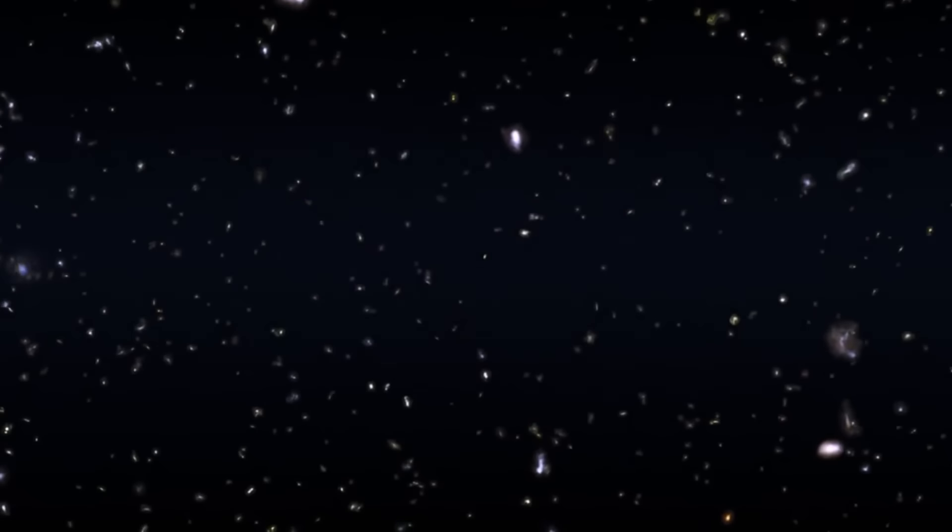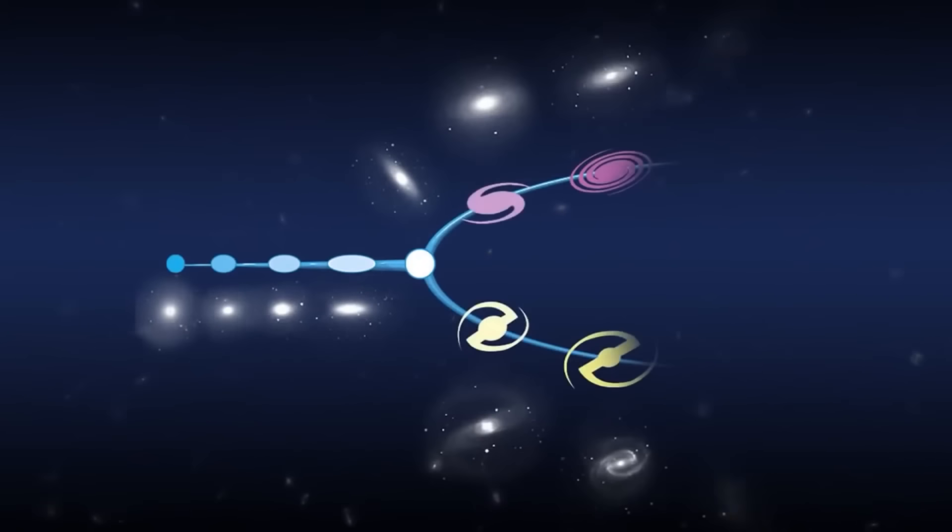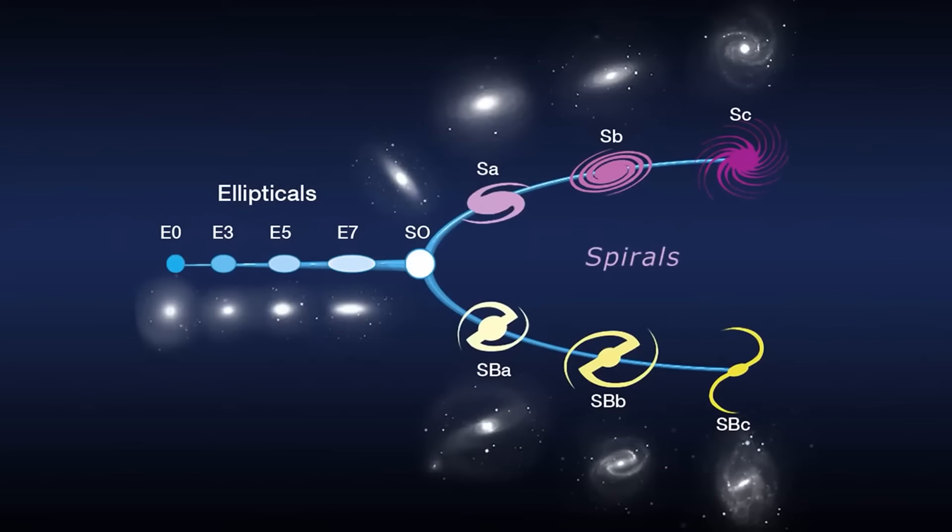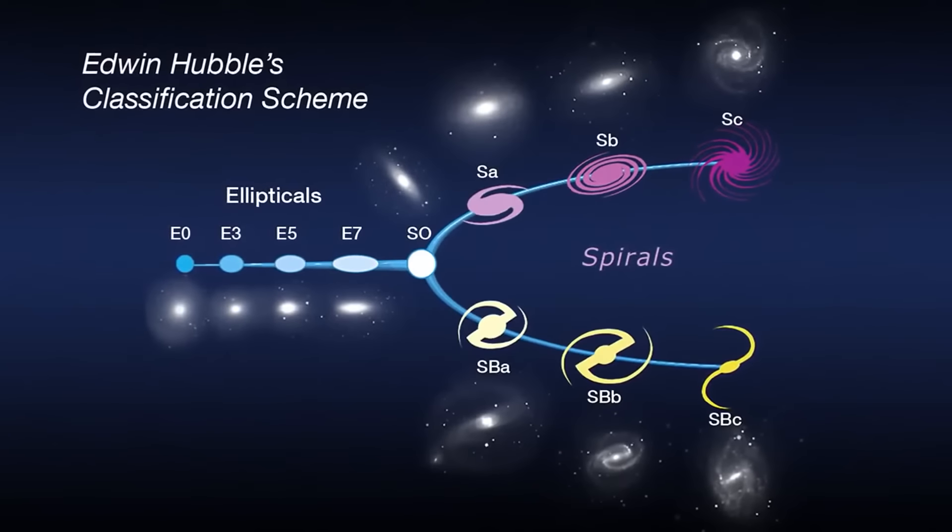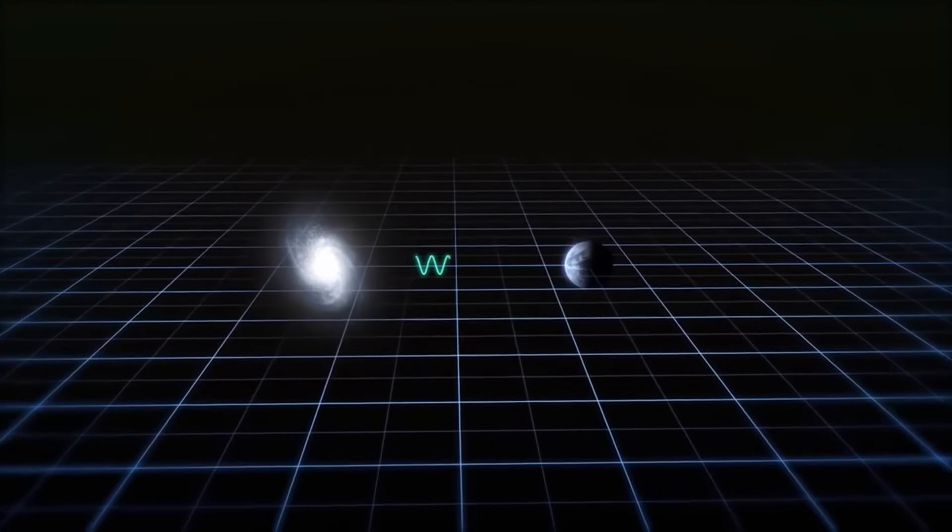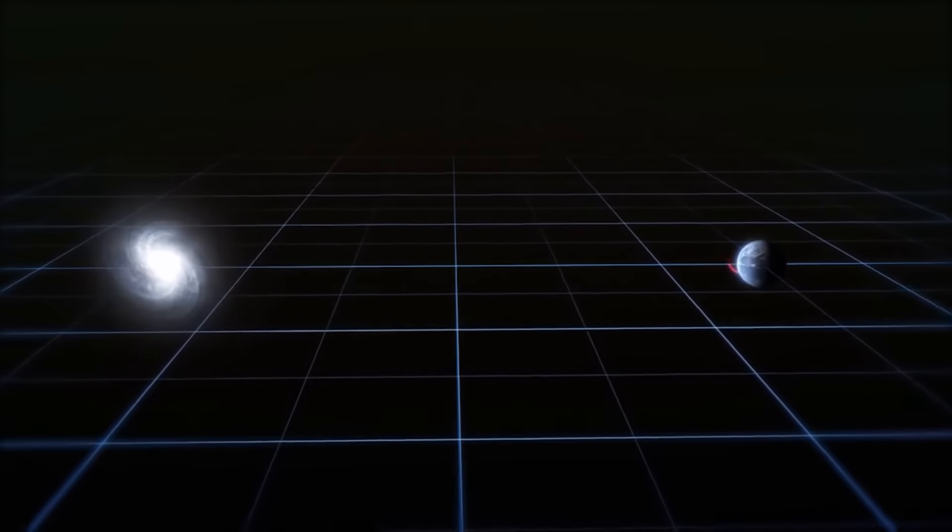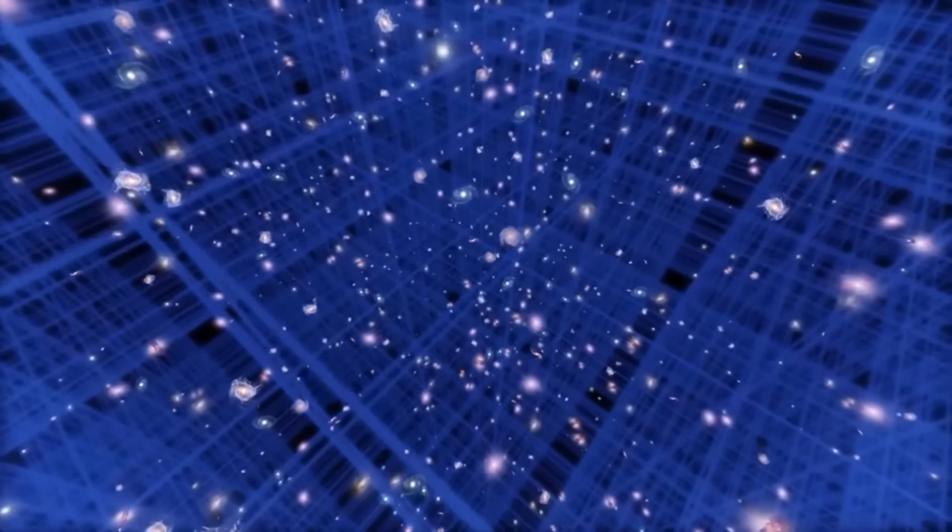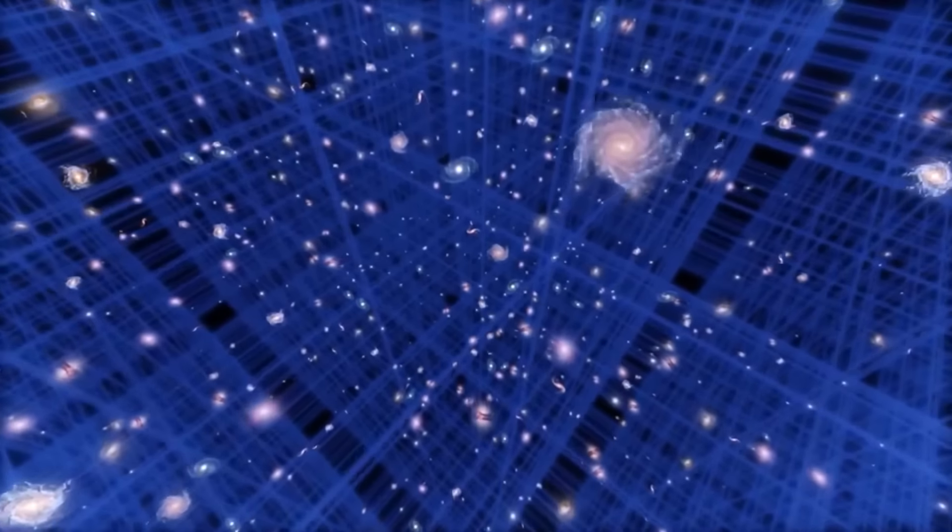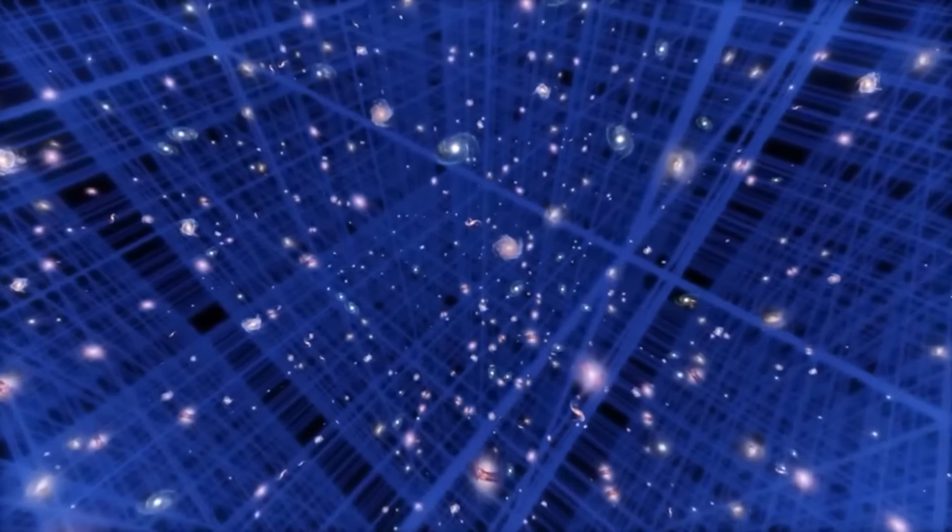In simple terms, galaxies beyond our local group all exhibit motion away from us, with those farther away receding faster. The universal trend suggests that everything in the cosmos is moving away from each other, occupying its distant space without altering its position. Hubble's deduction was that space itself expands uniformly, causing the galaxies of the universe to move farther apart. This expansion results in the creation of new space throughout the entire universe, with space stretching in every direction to generate additional space.